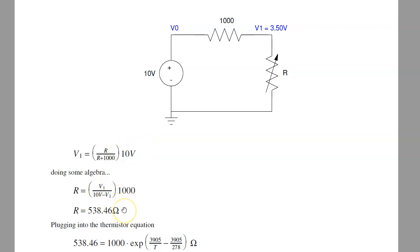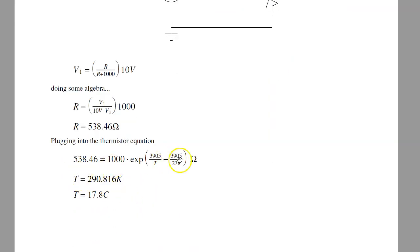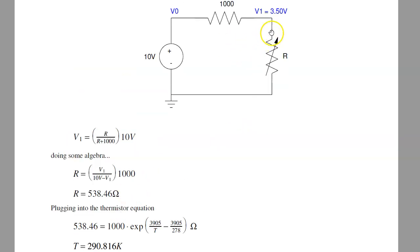If I then plug into the thermistor equation and solve for T, I get 290.816 Kelvin, or 17 degrees Celsius. Meaning that with the circuit, I can measure temperature if I can measure voltage.